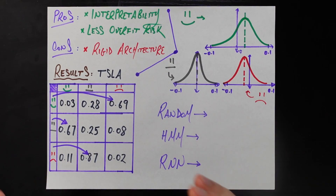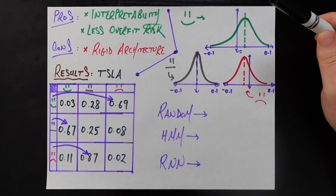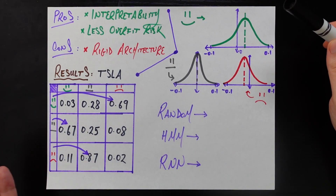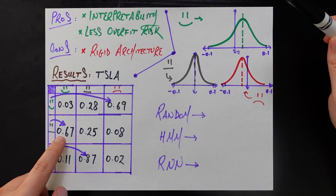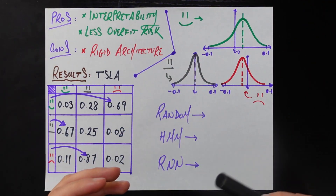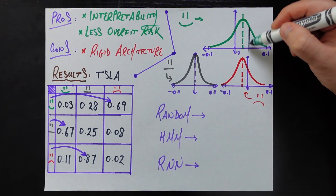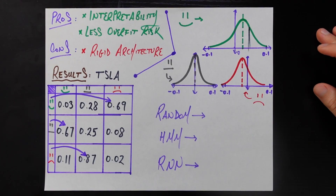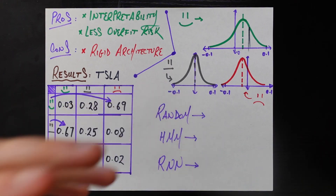How do we actually use this model to decide whether to buy a stock? We look at what sentiment the model assigned yesterday — say it was neutral — then use the transition matrix to find the most likely sentiment tomorrow, which would be positive. Given positive sentiment tomorrow, we look at that normal distribution and take a draw, which gives our expected return for Tesla tomorrow. We do this for all S&P 500 stocks, rank by expected return, pick the top 10, and invest $100 into each of those top 10 stocks.